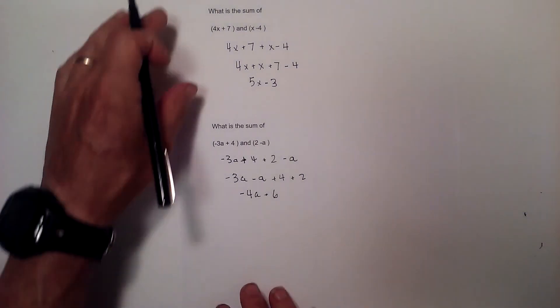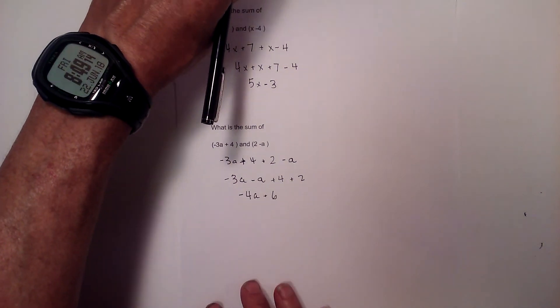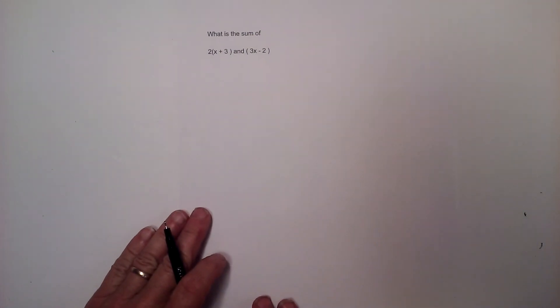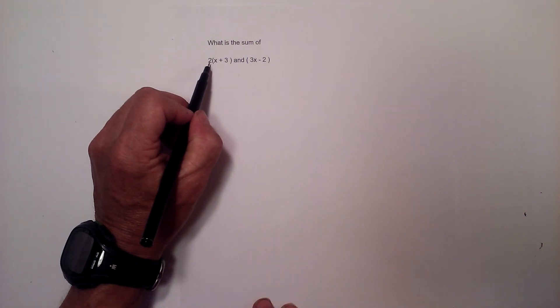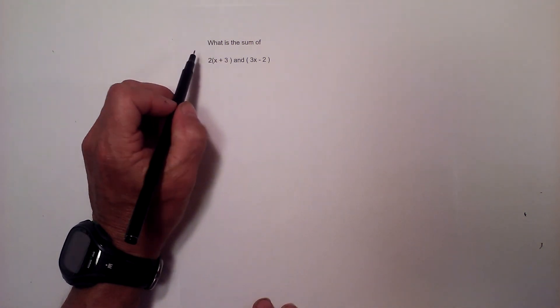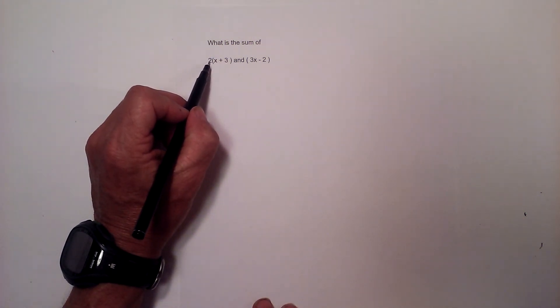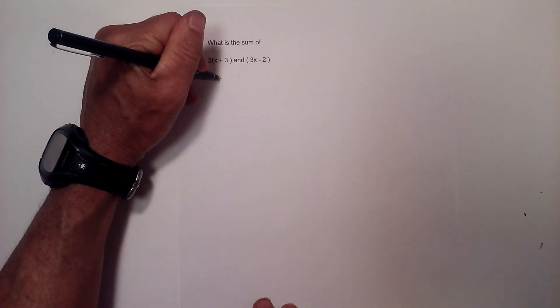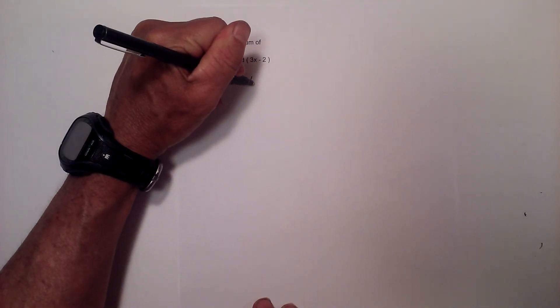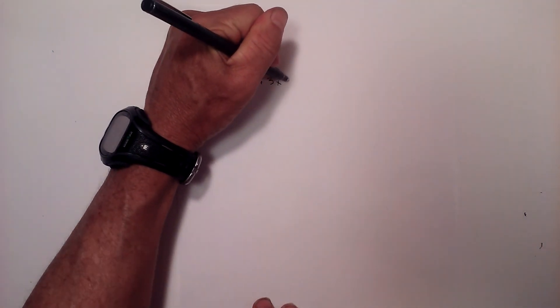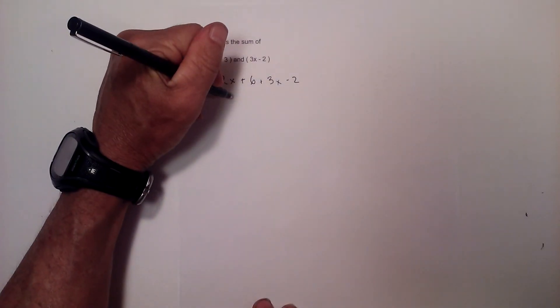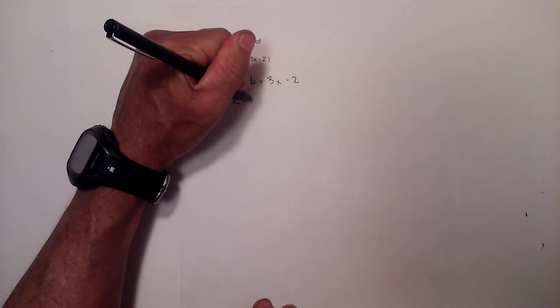And finally I have one in which you distribute. So now we have what is the sum of 2 times the quantity x plus 3 and 3x minus 2. When you have a number on the outside of parenthesis you can distribute. In other words you multiply the 2 times the x, so that will be 2x plus 6, because 2 times 3 is 6. Plus 3x minus 2. I am going to put like terms next to each other.